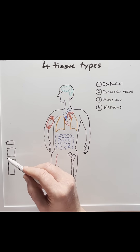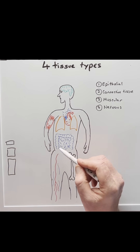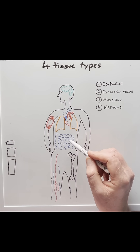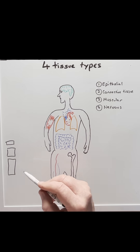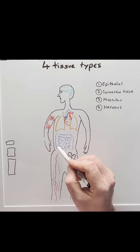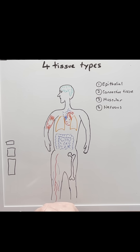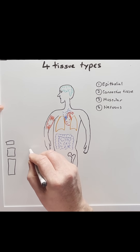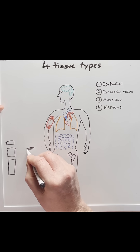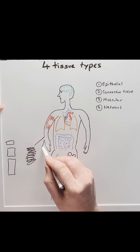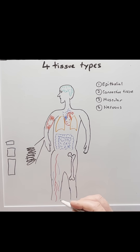If it's a simple cuboidal cell in the GIT, it's there to secrete enzymes to help with digestion. If it's a simple columnar tissue, like in the linings of the intestines, it's there to absorb nutrients. If it's stratified tissue, like a cell on top of a cell, you might find that with the skin, and that's there for protection.